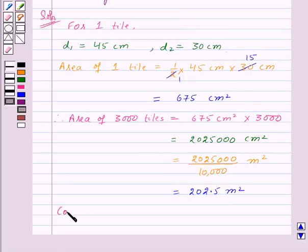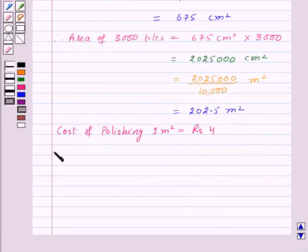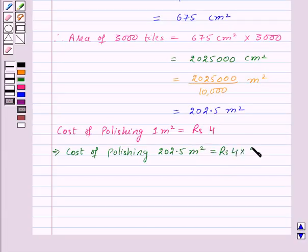Now, cost of polishing 1 meter square is equal to rupees 4. So this implies cost of polishing 202.5 meters square will be equal to rupees 4 × 202.5, that is equal to rupees 810.